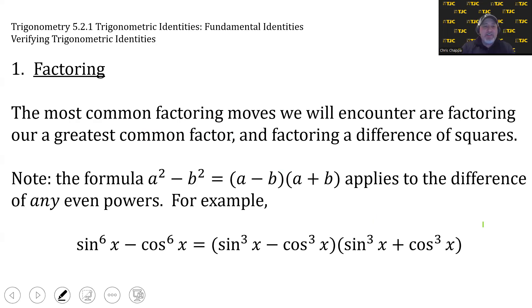Now this formula applies to the difference of any even powers. For example, if we add sin⁶x - cos⁶x, we can treat that like a square because any even power can be written as half the power squared. So sin⁶x is the same as (sin³x)². Same with cosine. And so we can factor it into (sin³x - cos³x)(sin³x + cos³x).